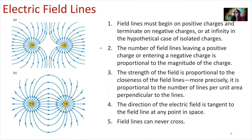Our second rule: the number of field lines leaving a positive charge or entering a negative charge is proportional to the magnitude of the charge. If your charge is greater, you're going to have a greater electric field, so you're going to have more electric field lines coming into or out of a charge that has a greater magnitude.